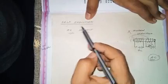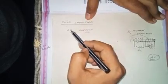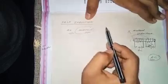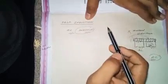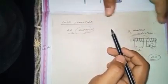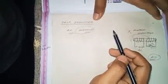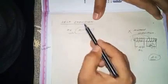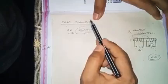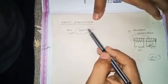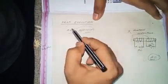Now, the AC current is passed through the solenoid. The AC current produces self-induction. Self-induction occurs when the AC current is flowing in a solenoid.